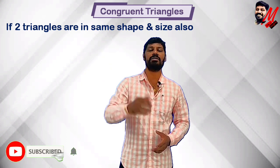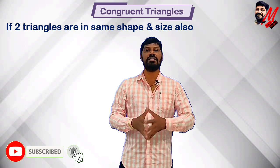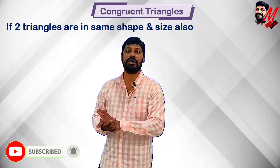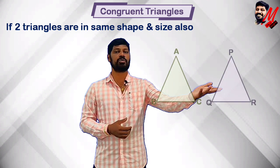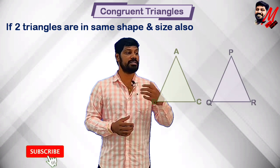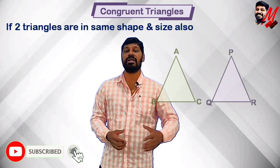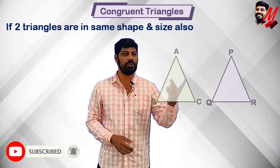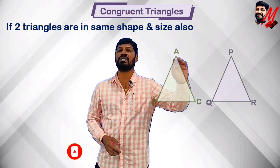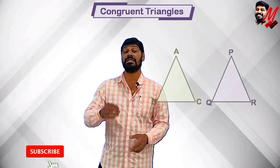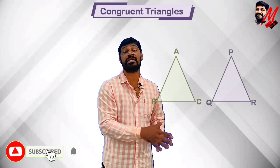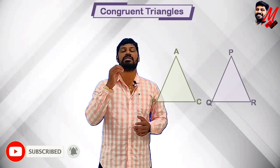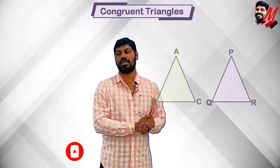As a definition: two triangles which are in the same shape and same size are said to be congruent triangles. If we look at two triangles and want to justify that they are congruent, we have to satisfy some conditions. Those conditions are called congruence conditions.